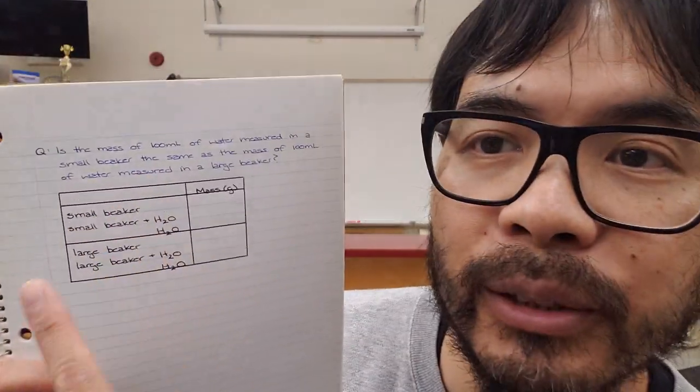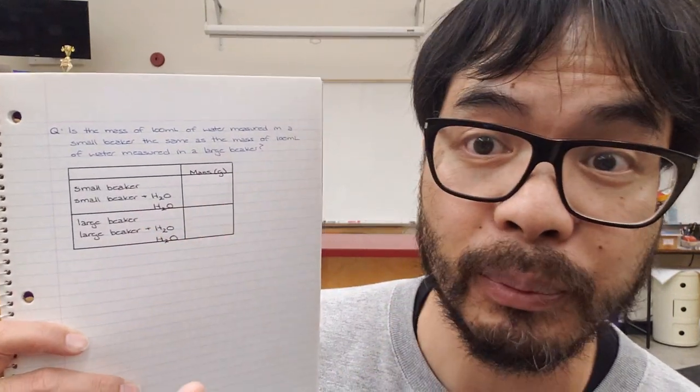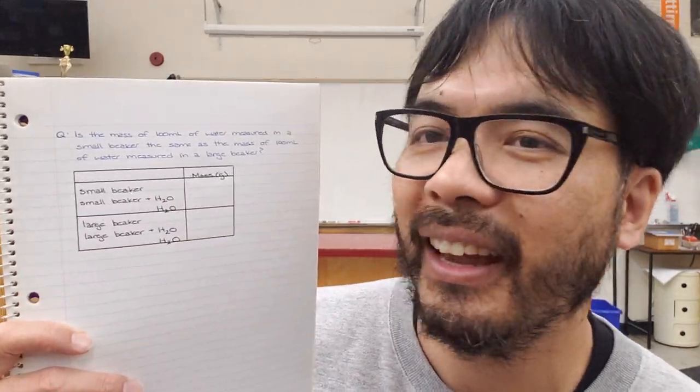Lastly, after all this, I give students another question to answer using our lab equipment for practice. Here's the question: is the mass of 100 mils of water measured in a small beaker the same as the mass of 100 mils of water measured in a large beaker? Then I get them to write another conclusion, I'll check it again, provide feedback, et cetera. Eventually I will get to the CER terms and then provide more structured practice.